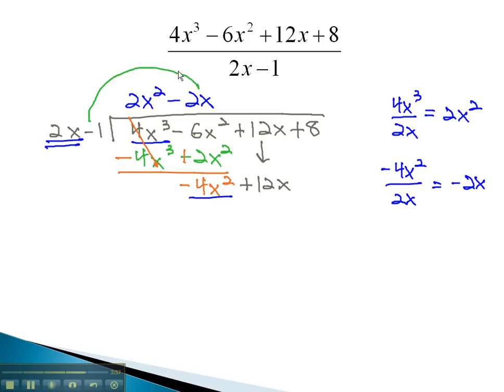Again, we multiply the negative 2x by each term to give us negative 4x squared plus 2x.